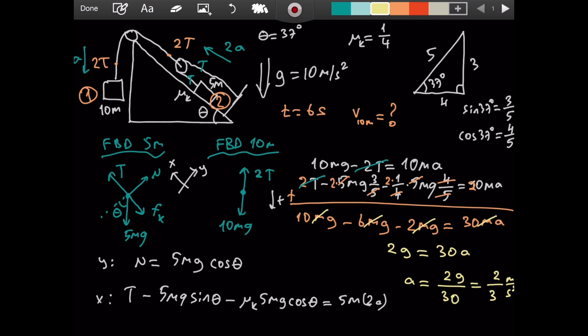We are not done yet. Because we are asked to find the velocity when time equals 6 seconds. Well, it will be very easy after this. Because we know that since this is uniformly accelerated motion, the velocity at any time equals the initial velocity plus the acceleration times time. The system was released from rest. So, the initial velocity is 0. That means the velocity at time 6 seconds equals the acceleration. And the acceleration of the 10m, we just found it. It is a. If we were being asked to find the speed of 5m, we would use 2a to be the acceleration. But we are interested in 10m right now. So, the acceleration is 2 over 3 times the time value is 6. So, we get 4 meters per second is our final answer.